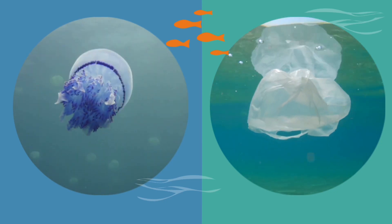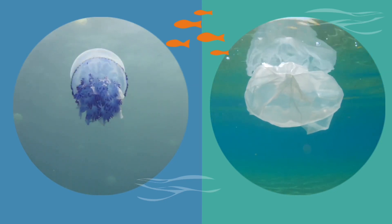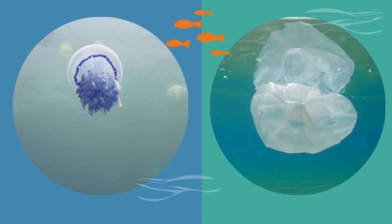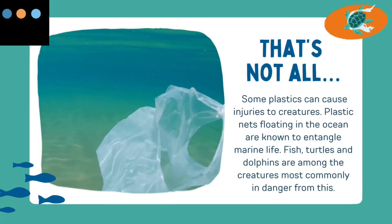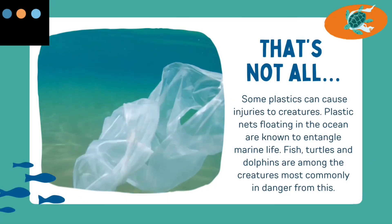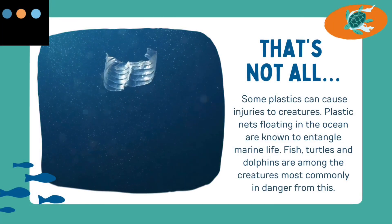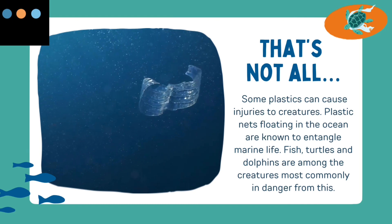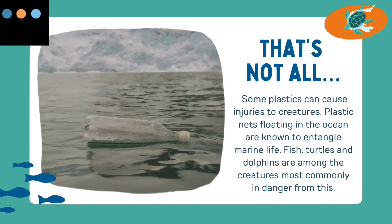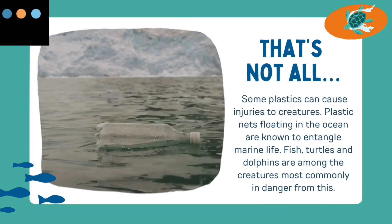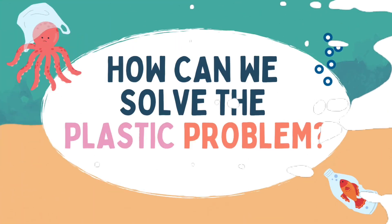For example, a plastic carrier bag can look a lot like a jellyfish, which is food for a leatherback turtle. Some plastics can cause injury to creatures. Plastic nets floating in the ocean are known to entangle marine life. Fish, turtles and dolphins are among the creatures most commonly in danger from this.